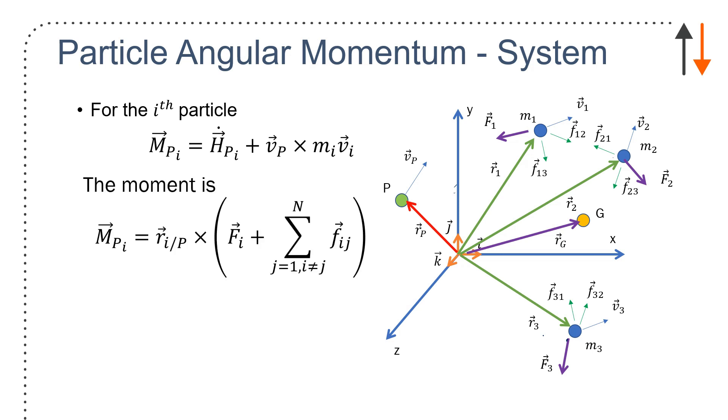And I can look at the moments and say, the moments are really the distance, the relative distance of each particle i with respect to P, cross with the individual forces plus the internal forces acting on that body. And if I sum over all of those particles, I go back to what I had before. So I have sum 1 to n of all n particles of moments about P and with respect to i and all of the rate of change of i and all of that stuff. And I end up with this final equation right here.